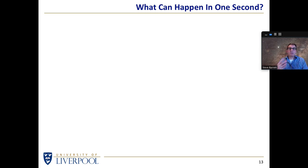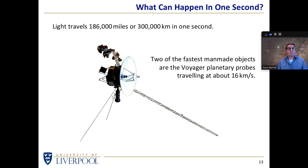We can also think on a slightly more mundane scale about what can happen in one second. We know light travels a great distance in one second: 186,000 miles or 300,000 kilometers. And of course, man-made objects only travel at a very pedestrian rate compared to that. Two of the fastest man-made probes, which are currently hurtling out of the solar system, they're only traveling at a rather mundane 16 kilometers a second.